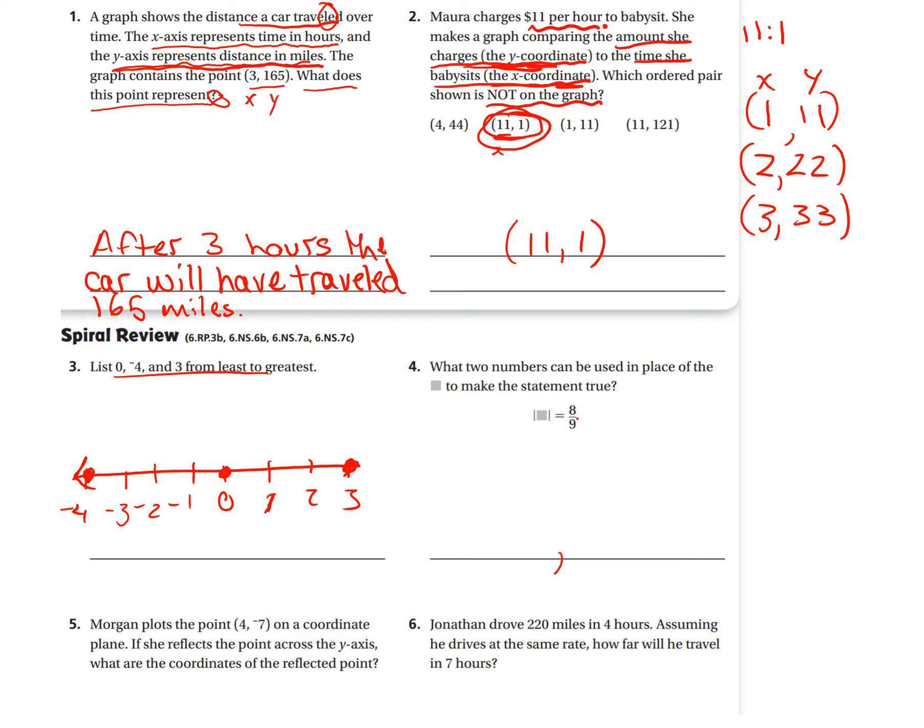Okay, number 5. Morgan plots the point (4, negative 7). Remember, x is first. So the 4 is on the x-axis and y-axis, negative 7. Again, if she reflects the point across the y-axis, what are the coordinates of the reflected point? So again, you're going to need graph paper for this problem. So go ahead and get your graph paper.